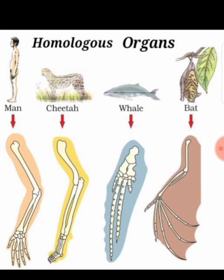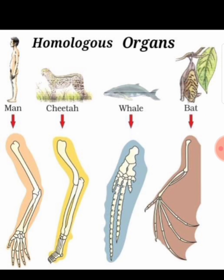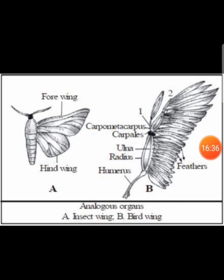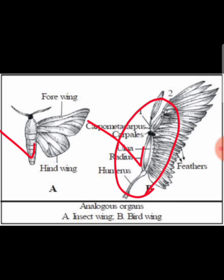Homologous organs have a similar origin and structure but perform different functions — for example, the bones of the forelimbs of man, cheetah, whale, and bat. Analogous organs perform the same function but have different structure and origin — for example, the wings of a butterfly and the wings of a bird. In bird wings you can find bones similar to humans, whereas butterfly wings are just integument.